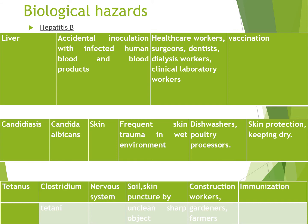بعد كده التيتانس: بتاع Clostridium tetani وده بيأثر على الـ nerve system. بيجي عن طريق الـ soil. أي حد اتجرح في الشارع أو بيتعامل مع حيوانات أو نباتات دايماً نسأله: واخد تطعيم التيتانس ولا لأ؟ لو لأ روح خده. الناس الأكتر عرضة: اللي بيشتغلوا في الجنين والحقول لأن فيه حيوانات كتيرة. الوقاية: نعمل تطعيم قبل الإصابة. ولو حد اتجرح في المنطقة دي مش هستنى - هعمل له الـ toxoid على طول.